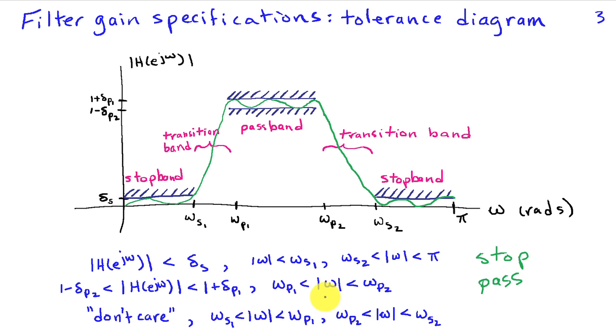And that's going to hold in this particular band pass case when the magnitude of omega is between omega P1 and omega P2. And then finally, in the transition band,